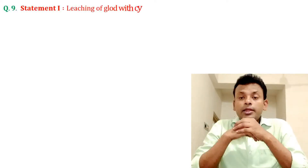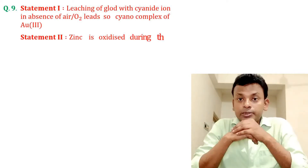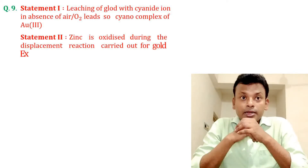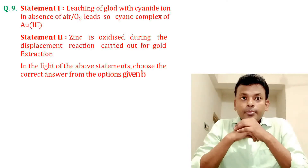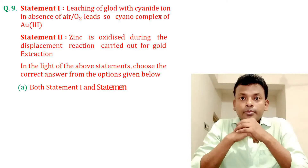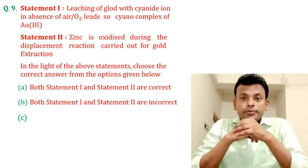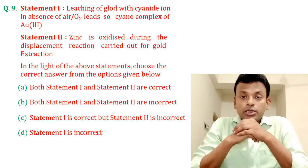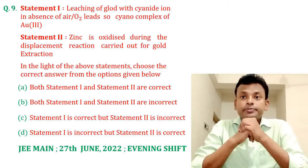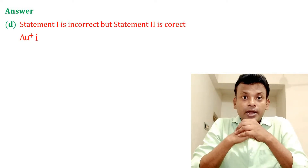Question number nine: Given below are two statements. Statement one: Leaching of gold with cyanide ion in the absence of air or oxygen leads to a cyano complex of Au³⁺. Statement two: Zinc is oxidised during the displacement reaction carried out for gold extraction. This question was set in JMN 27th June 2022 evening shift. Answer: Option D is correct. Statement one is incorrect — Au⁺ is correct, not Au³⁺. Statement two is correct.